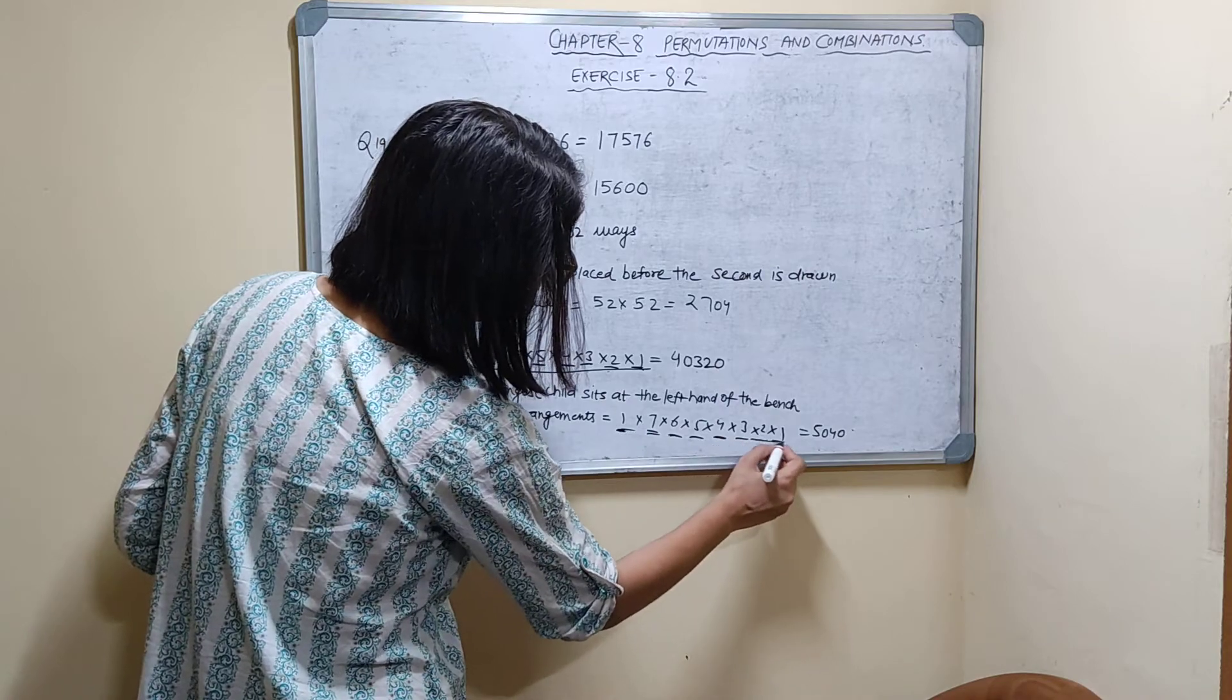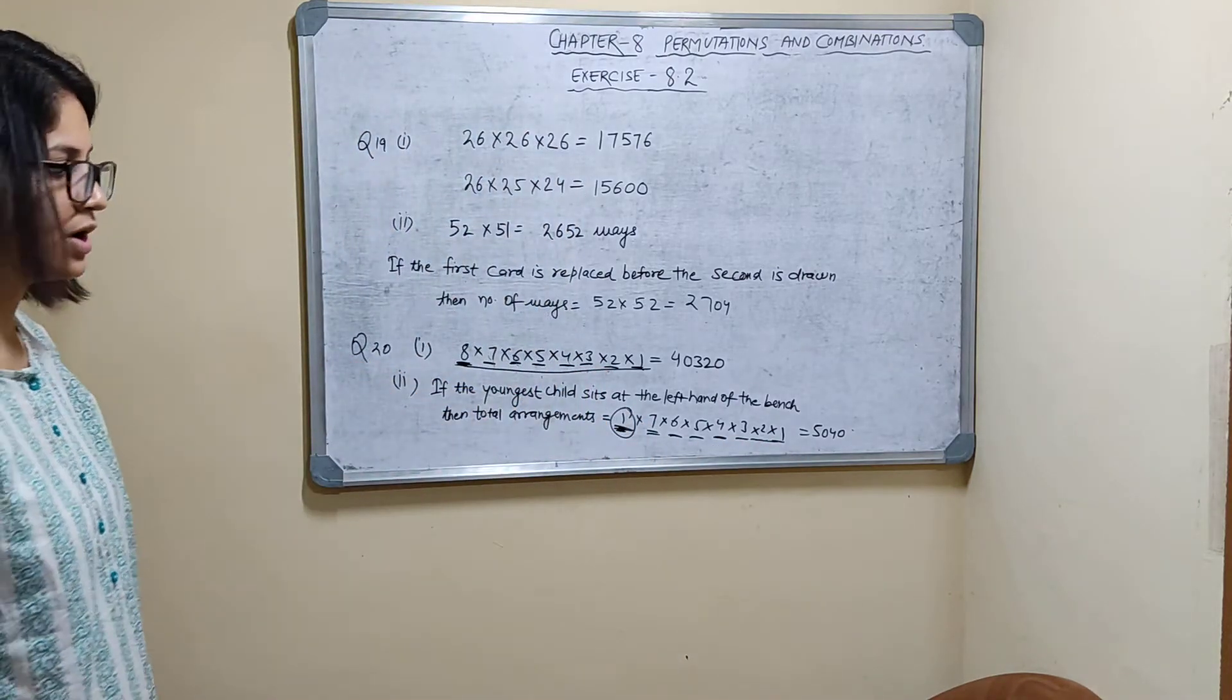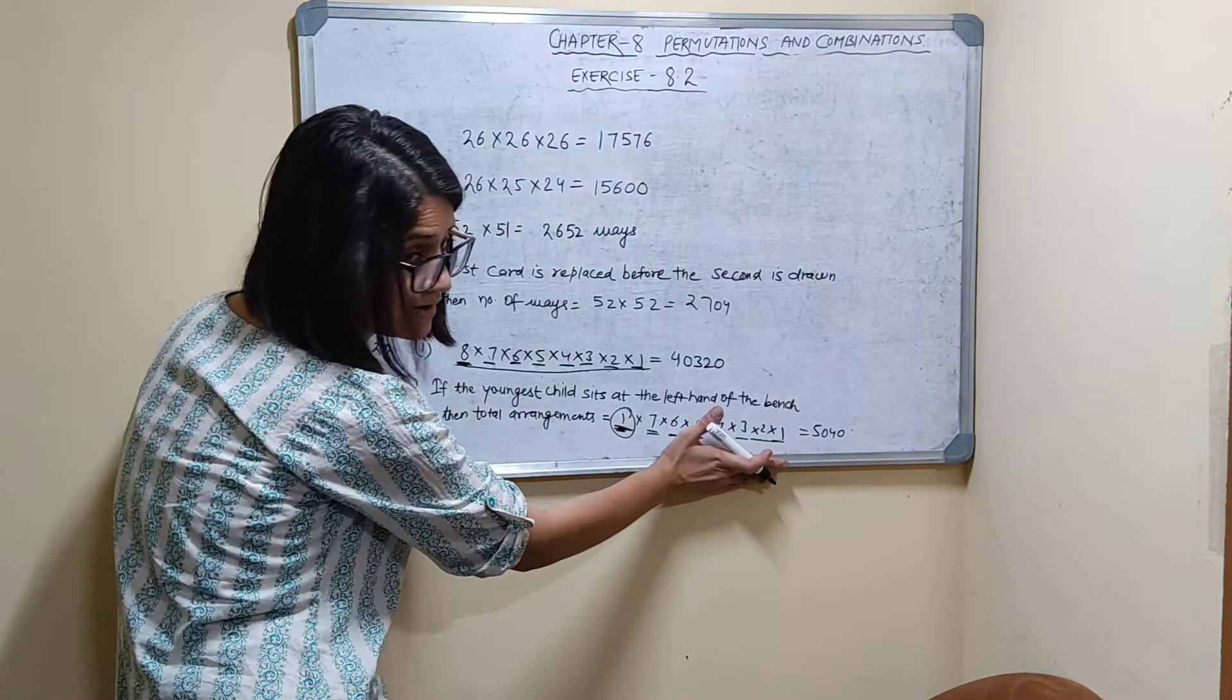So from eight sittings, one, two, three, four, five, six, seven, eight. This left hand is fixed for youngest child. So one child is gone. Now only seven children are left.